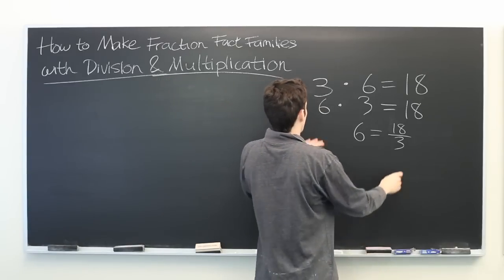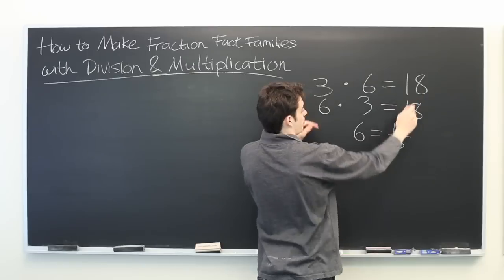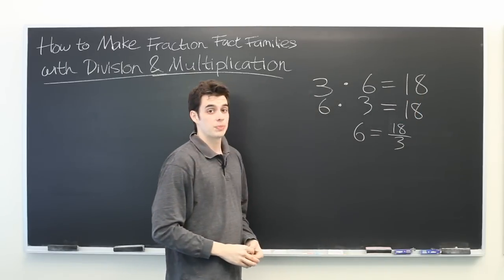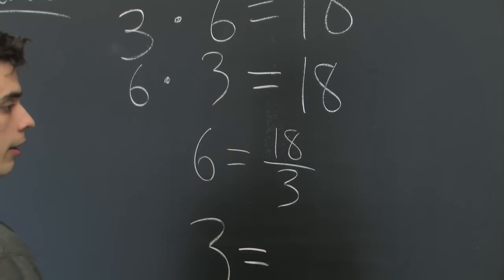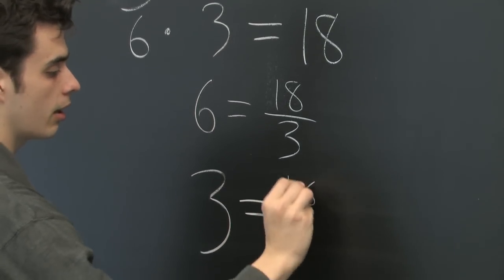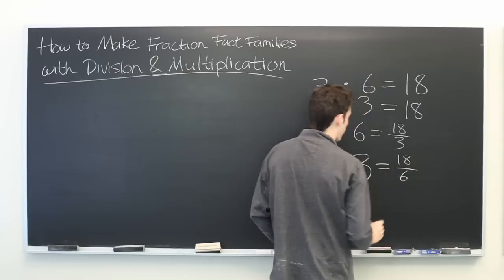Similarly, if we take this equation, or this one, and divide both sides by 6, we get 3 is equal to 18 divided by 6.